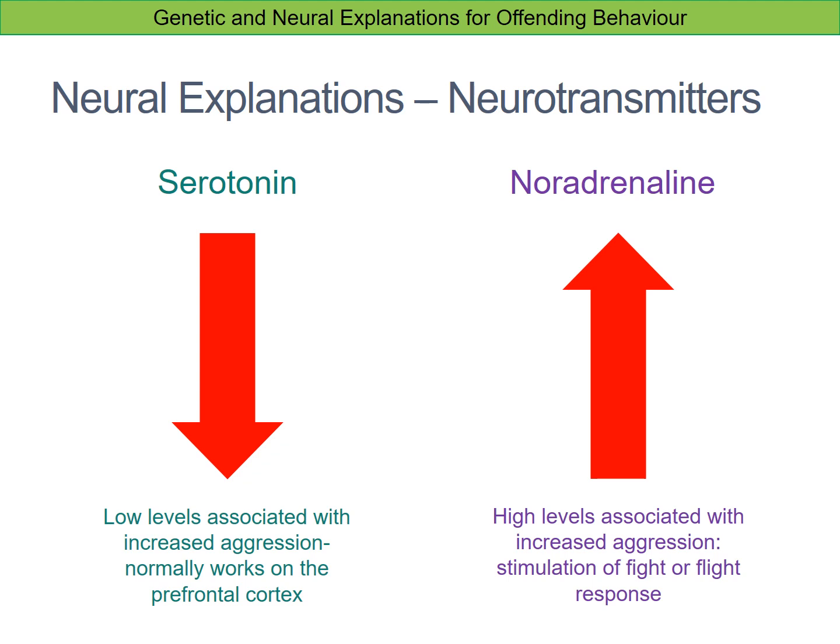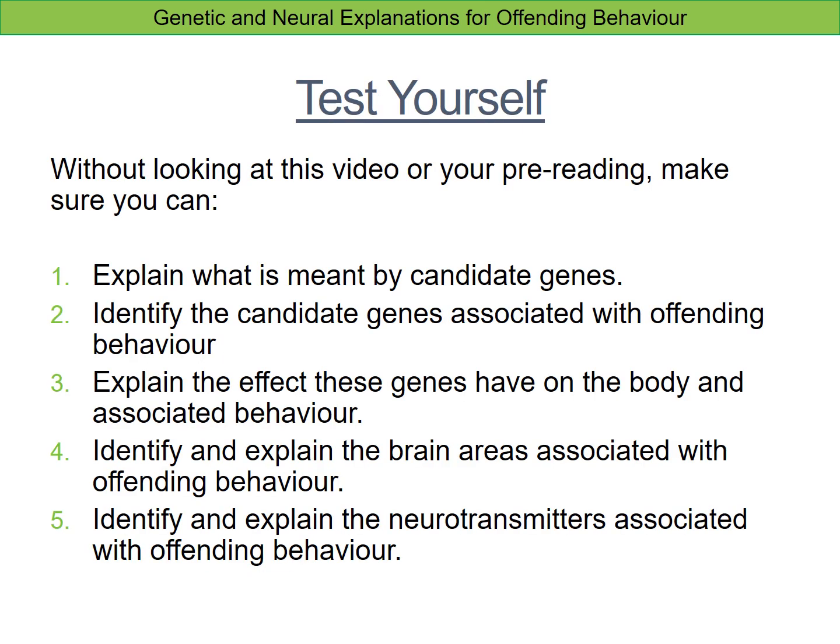The second neurotransmitter is noradrenaline. High levels of noradrenaline provoke stimulation of the fight-or-flight response, and as you will know from biopsychology, one of those possible responses is an aggressive response. So high levels of noradrenaline tend to be associated with increased aggression.